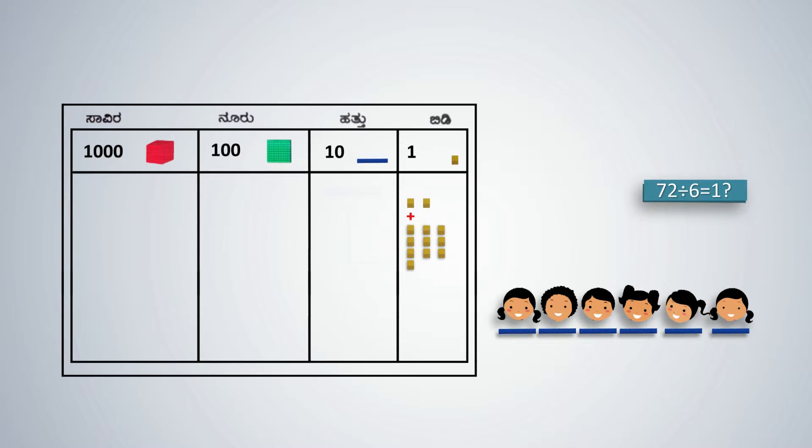10 units plus 2 units gives us a total of 12 units or 12 yellow cubes. 12 units when divided by 6 is 2. The quotient or answer is 1 blue rod and 2 yellow cubes, which is 12 units.